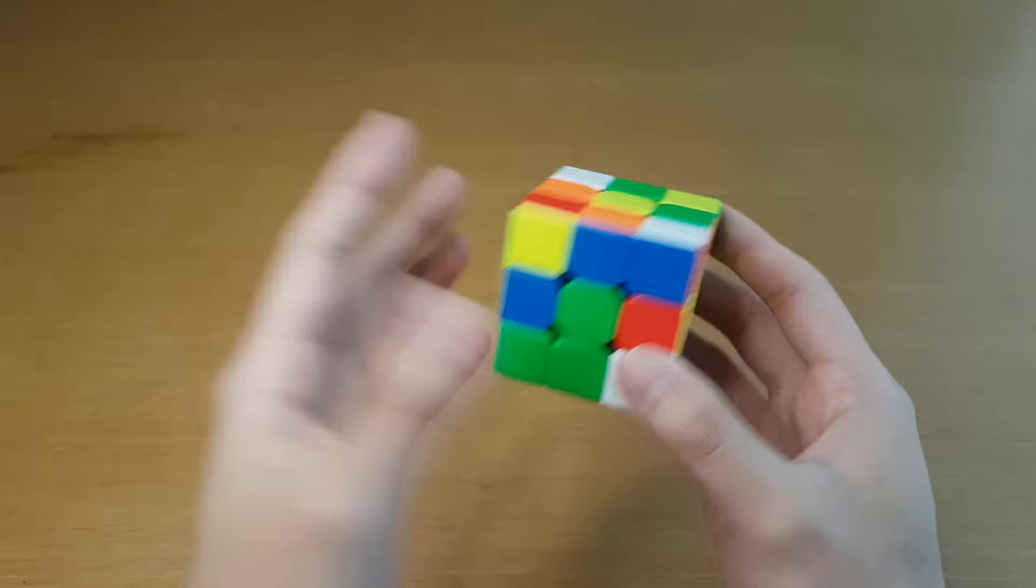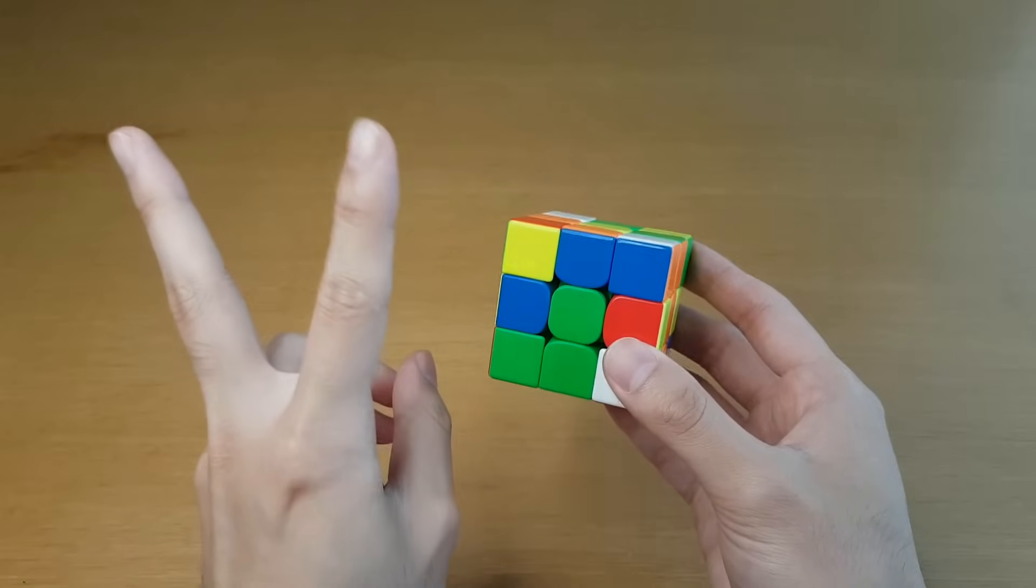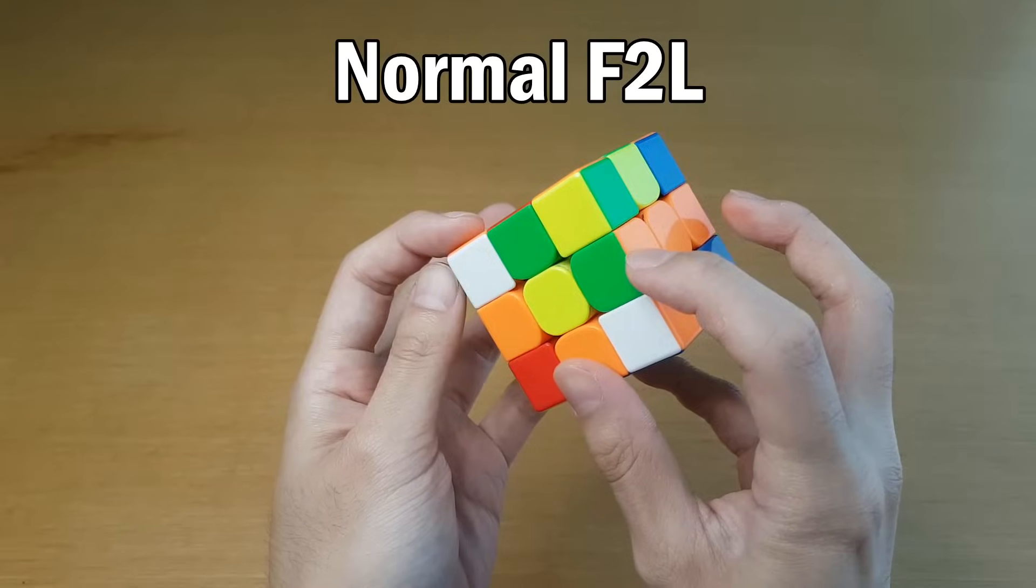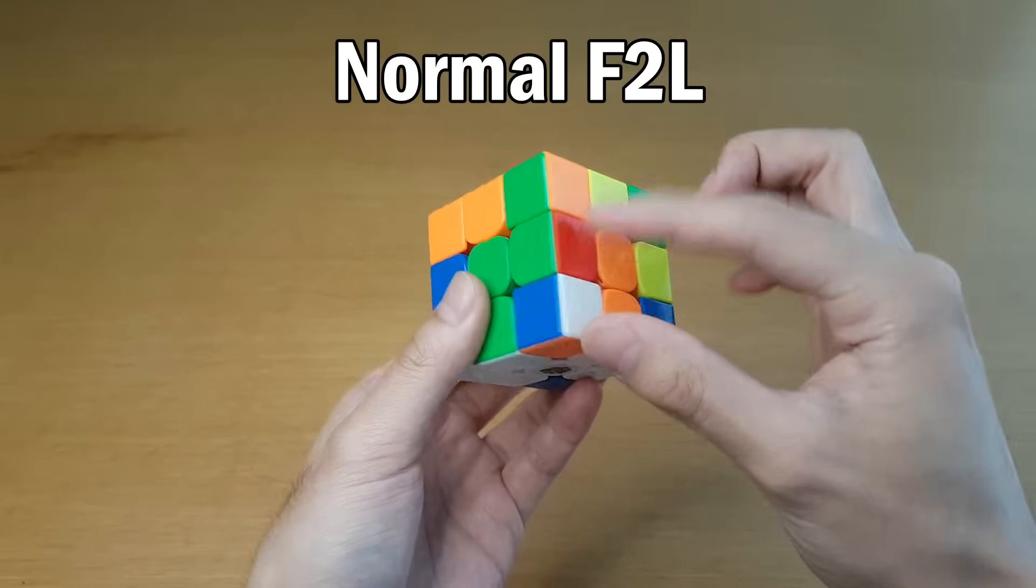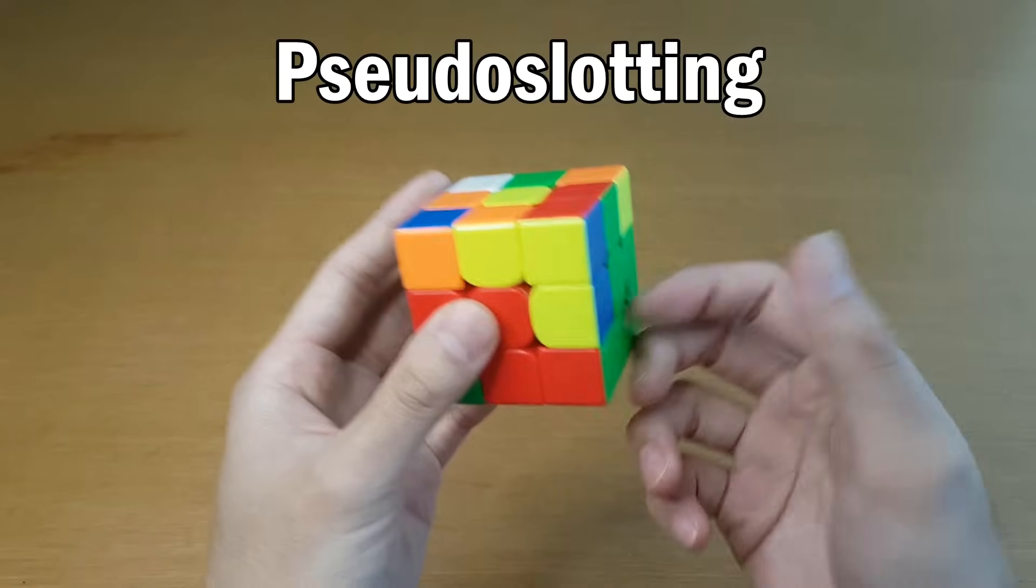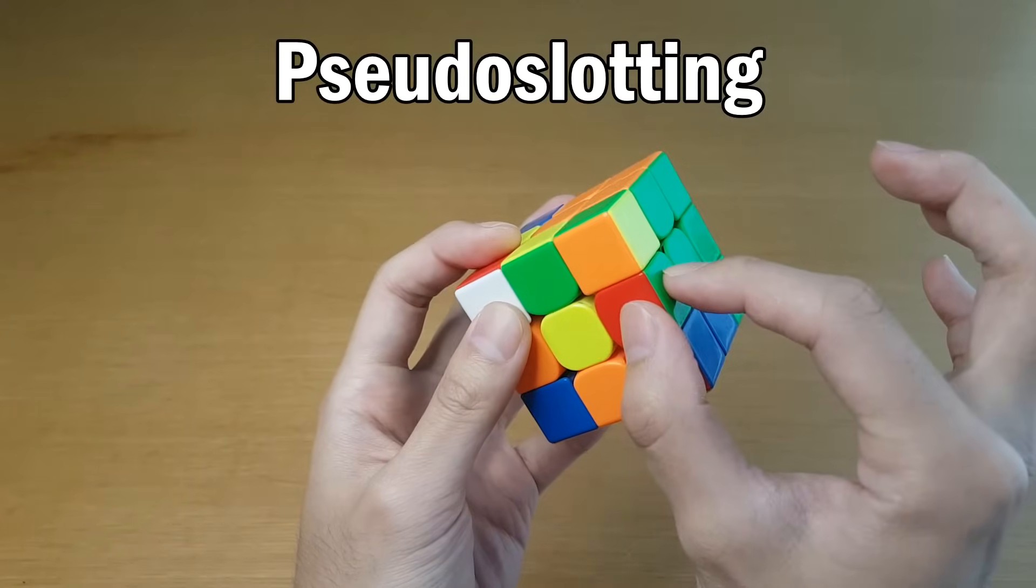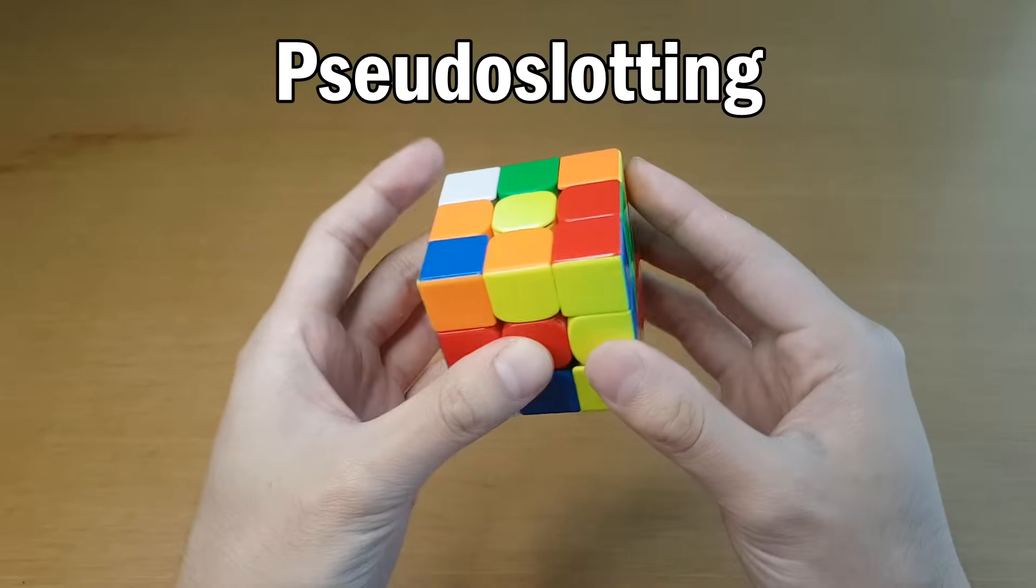Pseudo-slotting is an advanced technique, but it is the same thing as regular F2L, just with two different slots at once. In normal F2L, you find a corner and edge piece with the same colors on them, and then you pair them up in a way where you can insert them into the same colored slot. With pseudo-slotting, you find a corner and an edge, but they don't have to be all the same colors, and then you'll insert them into two different slots at once by joining them.